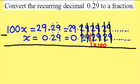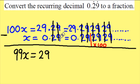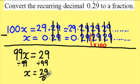Until I reach my integer values at the beginning, leaving me with 99x's because 100x's take away an x is 99 equals 29 because my recurring values have gone. Dividing both sides by 99 leaving me with my final answer which is x is 29 divided by 99 as a fraction.